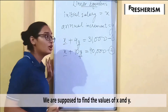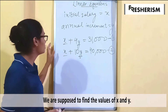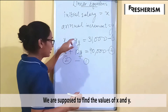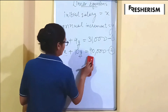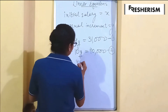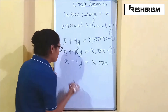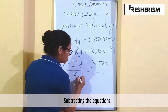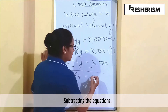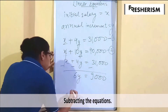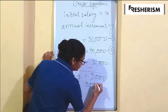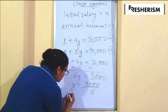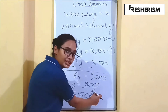We can subtract equation 1 from equation 2 to find the variables. Subtracting: x minus x is 0, 10y minus 4y is 6y, and 40,000 minus 31,000 is 9,000. So 6y equals 9,000, which gives us y equals 1,500. So his annual increment per year is 1,500 rupees.